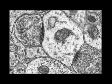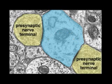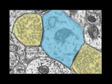Neurons transmit chemical signals across synapses, like the one shown in this electron micrograph. We can identify the dendrite of the receiving, or postsynaptic cell, as well as two presynaptic nerve terminals loaded with synaptic vesicles. Note the narrow cleft separating the pre- and postsynaptic cells.